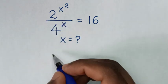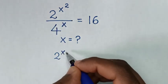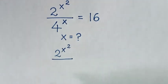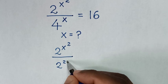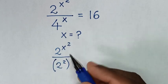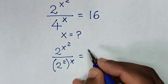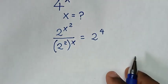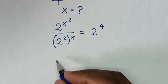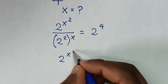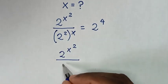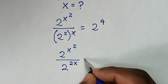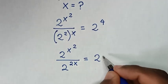So from here, in the numerator it is 2 power of x squared, then over 4 power of x. 4 is the same as 2 squared, then bracket power of x, is equal to 16, which is the same as 2 power of 4. Then in the next step it will be 2 power of x squared over 2 power of 2 times x, which is 2x, is equal to 2 power of 4.